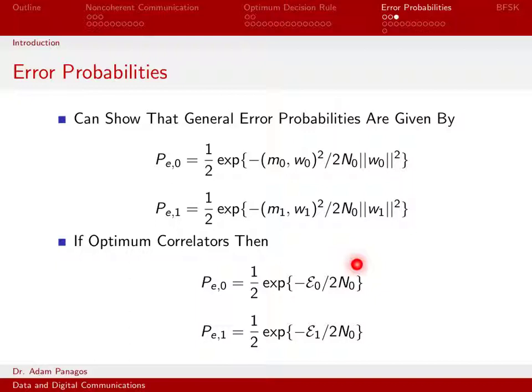and the derivation of these, which we'll do next, takes a lot of math to get there, the final answer we get is actually simpler than what we've had for the Gaussian case.